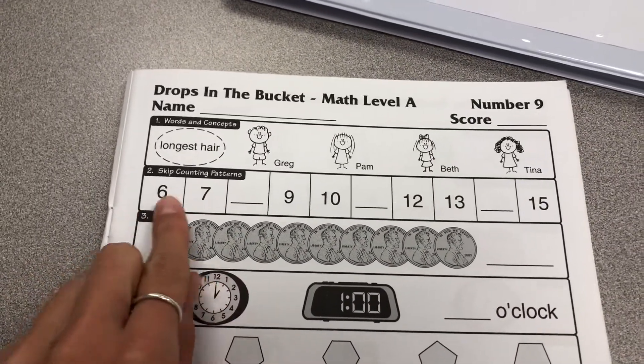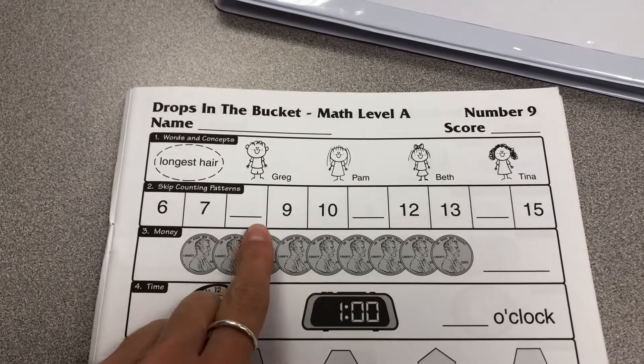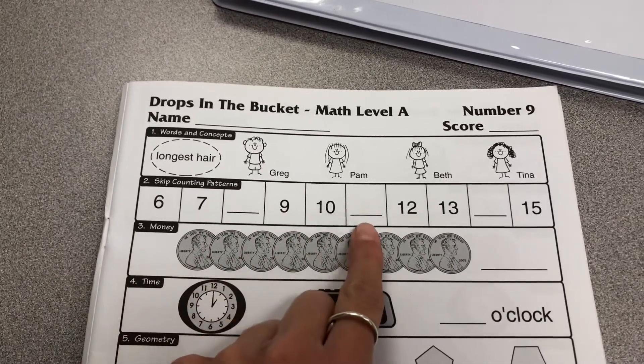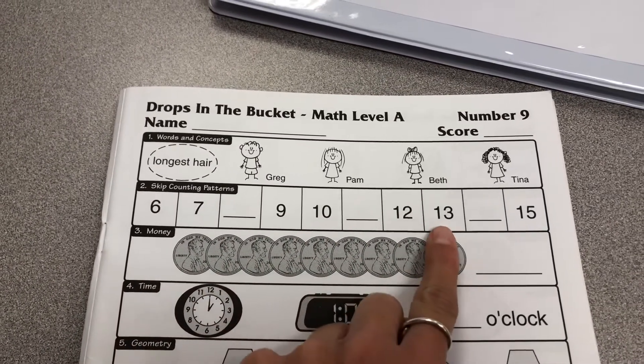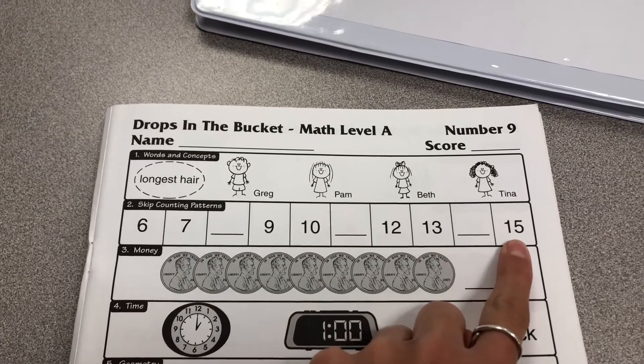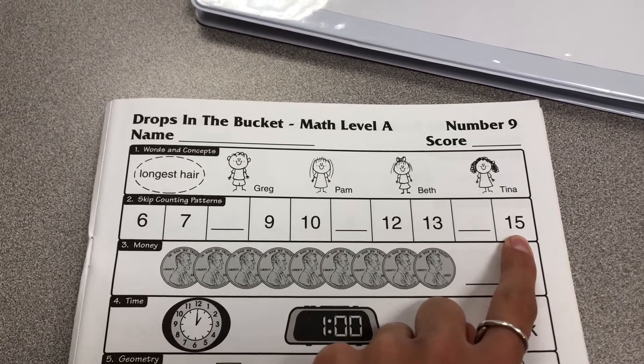Skip counting. Six, seven, nine, ten, twelve, thirteen, fifteen. Put the numbers in that are missing.